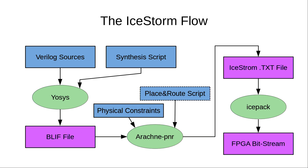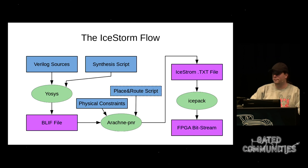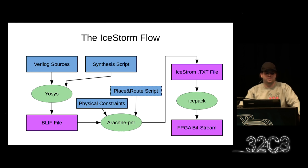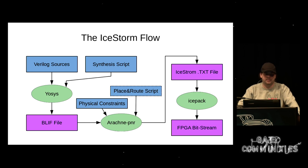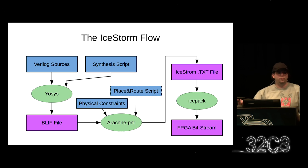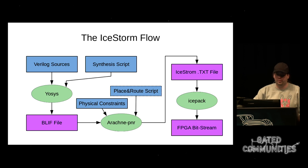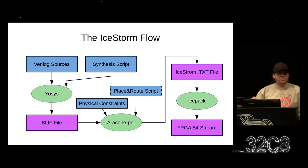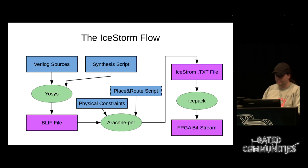This is the flow overview. You start with Verilog sources and a synthesis script. The synthesis script reads the Verilog files and executes a few macro commands to synthesize for the specified target — in this case the iCE40 FPGA. The output of Yosys is a BLIF file. BLIF is a very easy, simple netlist format, and it's one of many formats that Yosys supports as backends. We've made some extensions to BLIF to enable additional attributes on cells and parameters.